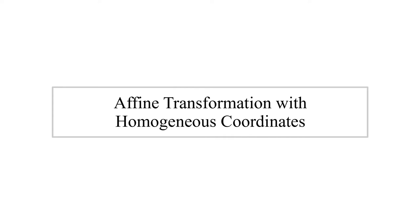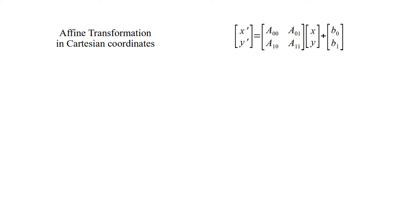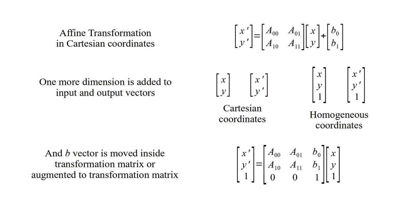Affine transformation with homogeneous coordinates. This is the affine transformation equation in Cartesian coordinates. One more dimension is added to the input and output vectors. And this is the affine transformation equation in homogeneous coordinates. Using this equation, affine transformation is performed with a single matrix-vector multiplication.